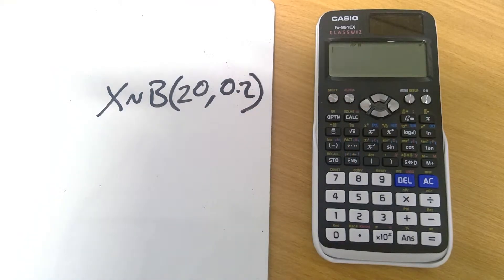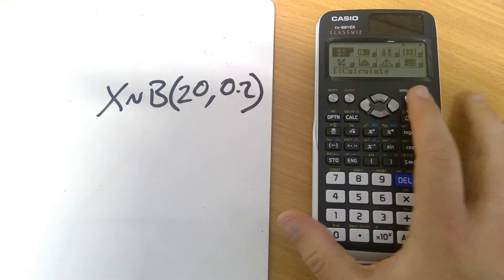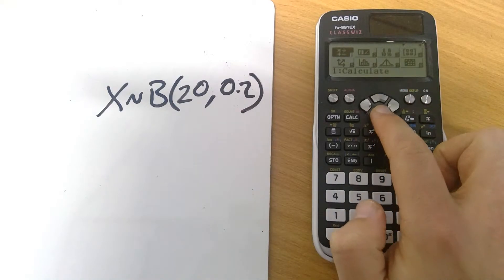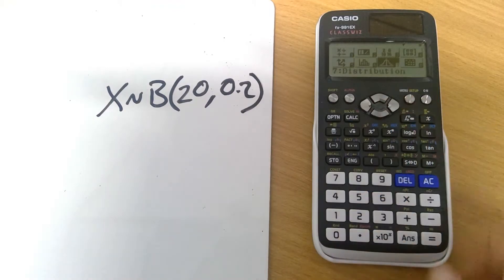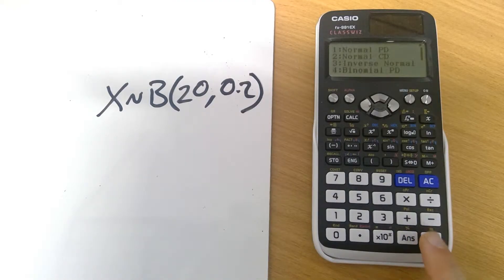So how do we get into the distribution mode? If we press the menu button we can see we've got various options here and what we want to do is go down to number 7, the distribution. You can press 7 or you can move and then press the equals button. We can see there we've got a range of different options.